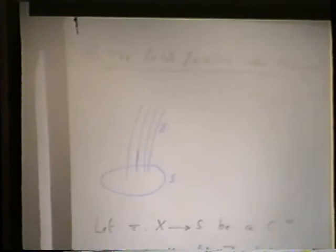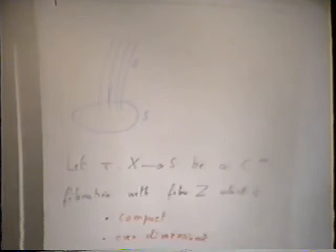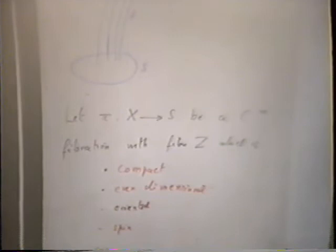Let me remind you of the families index theorem in its local version. I give myself a smooth fibration with compact fibers Z. Each fiber carries a Dirac operator, so I ask the fibers to be compact, even-dimensional, oriented, and spin. I introduce in each fiber a Dirac operator D_Z which acts along the fibers.